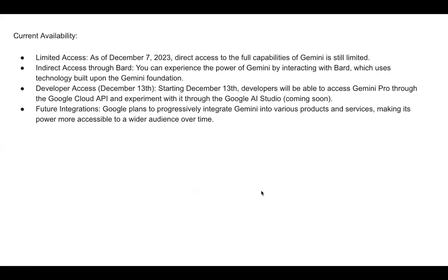Luckily, AlphaCode 2 is not available today. As of December 7th, direct access is still limited, but developers can access Gemini Pro through the Google Cloud API starting December 13th. They can also experiment with Google AI Studio, which is coming soon. Google plans to progressively integrate Gemini into various products and services, making it more accessible to a wider audience over time.